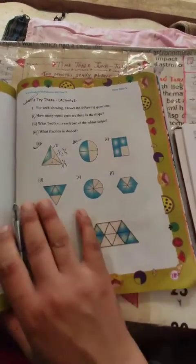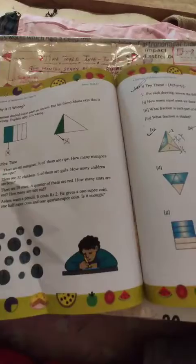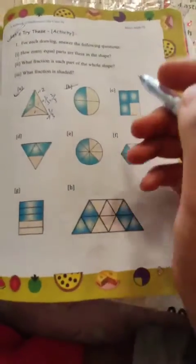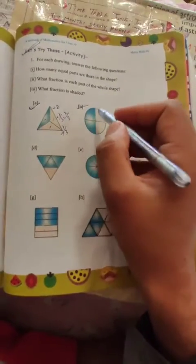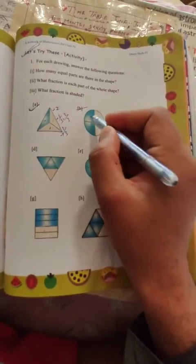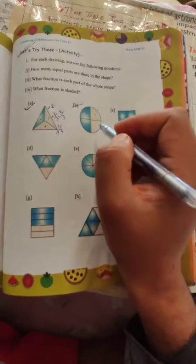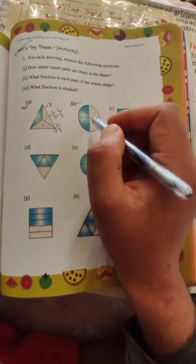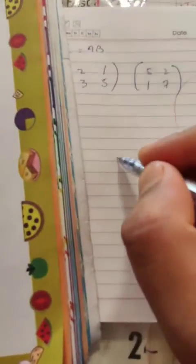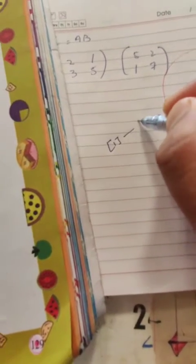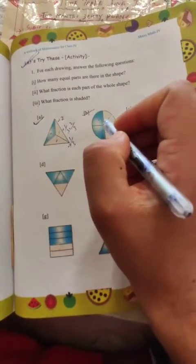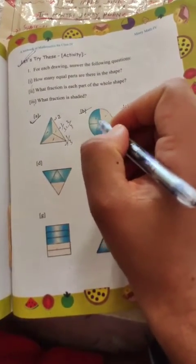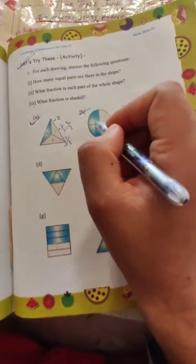Part B: How many equal parts are there in the shape? The shape has four equal parts. What fraction is each part of the whole? Each part is 1/4.